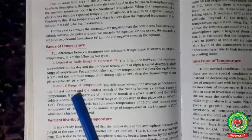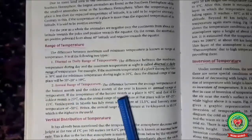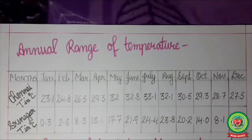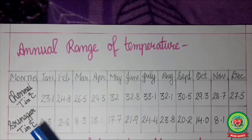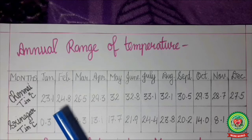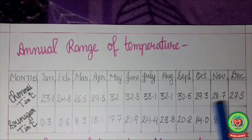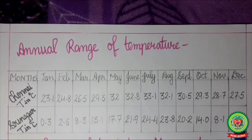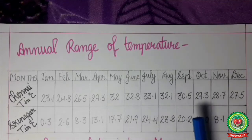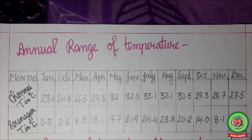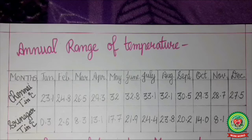Now we will discuss annual range of temperature with the help of a table. In this table I have taken two cities: Chennai and Srinagar. The average temperature of all 12 months of both cities are written here. For finding the annual range of temperature, first we need to find the maximum temperature and the minimum temperature of that city in that year.